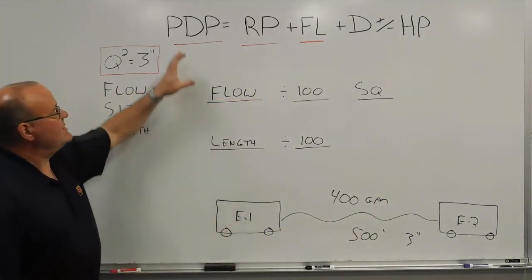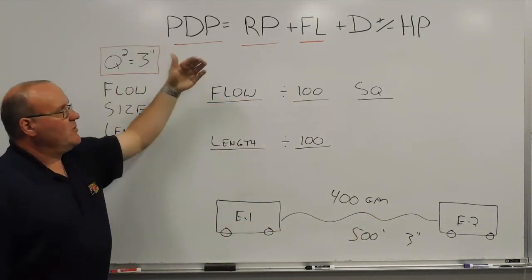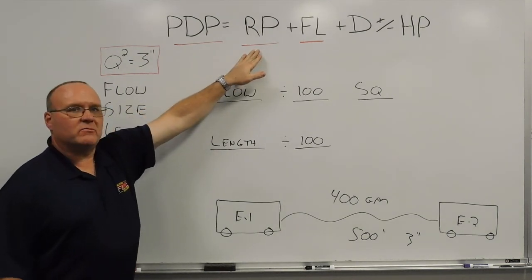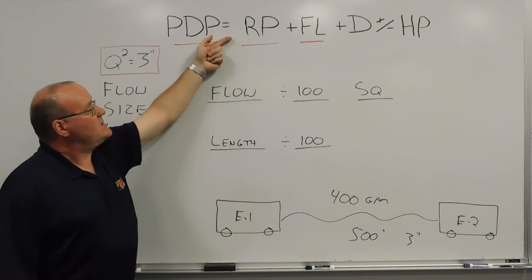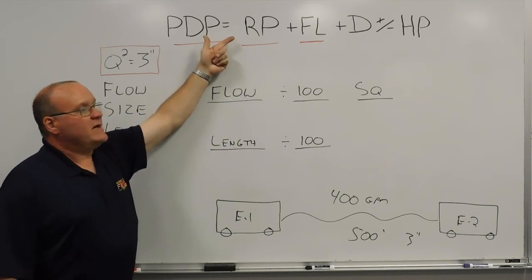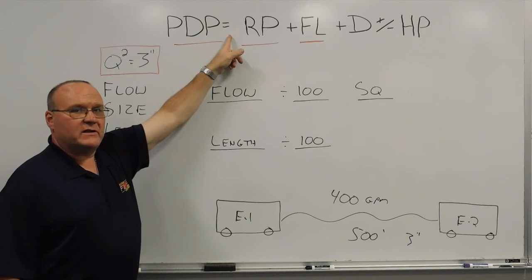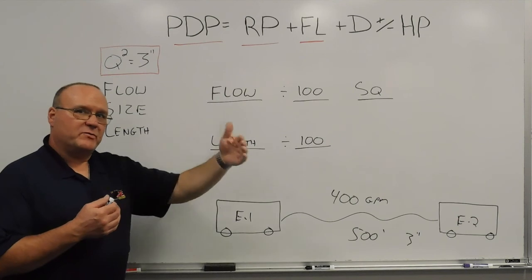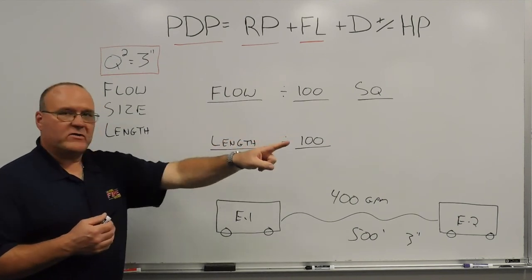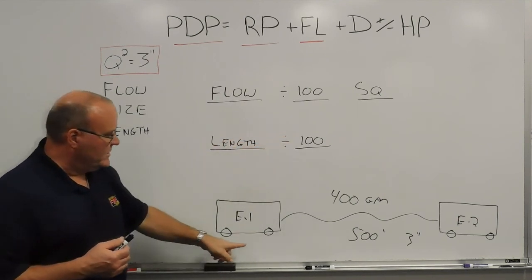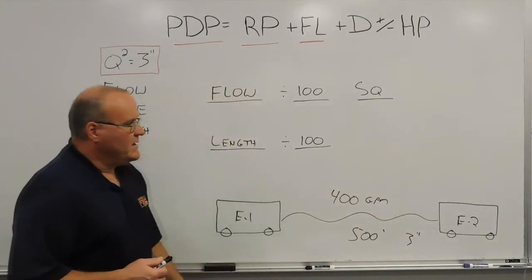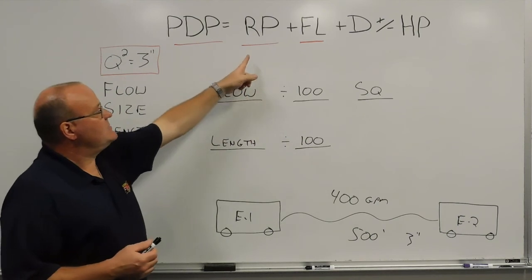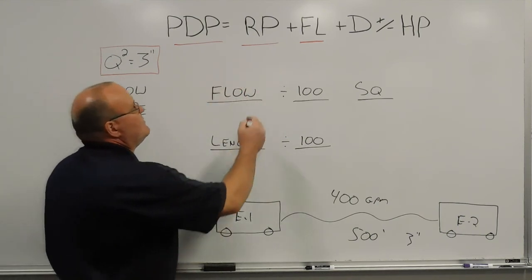In a previous training minute, we talked about this formula and different roles on the fire ground — whether it was an attack engine, a relay, or a supply engine. In this case it's a relay or supply engine, so instead of a nozzle pressure, we calculate a residual pressure. Any time we're going from pump to pump — engine 1 to engine 2 — we want to give that other driver operator a pressure to work with beyond what we're flowing. That residual pressure we calculate is 50 pounds.